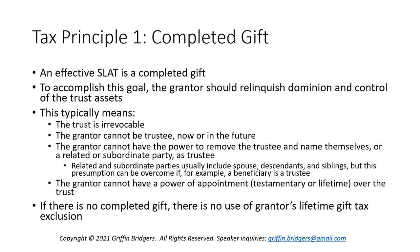We're going to look at three basic tax principles, the first of which is that you have to have a completed gift. An effective SLAT has to be a completed gift because without a completed gift, there is no use of the grantor's lifetime gift tax exclusion. To get there, the grantor should relinquish dominion and control over the trust assets. That typically means the trust is irrevocable and the grantor is not going to retain any power of appointment — whether testamentary or lifetime, special or general — over the trust itself.